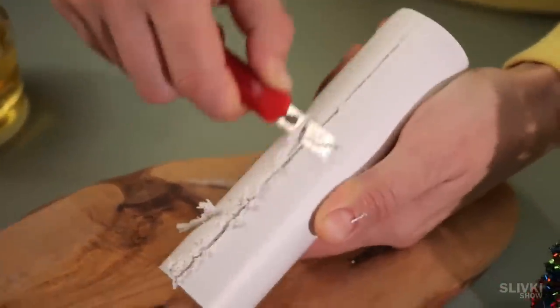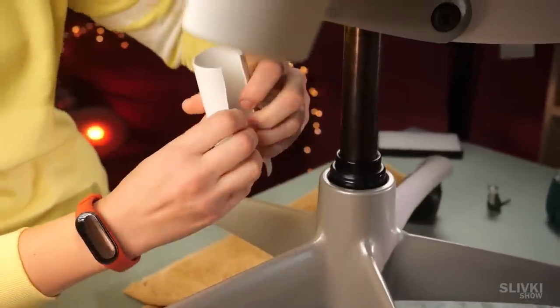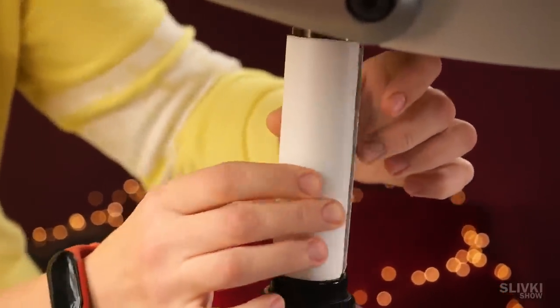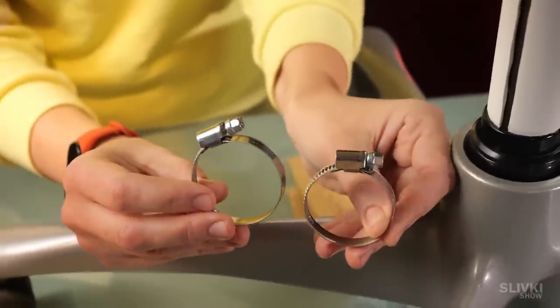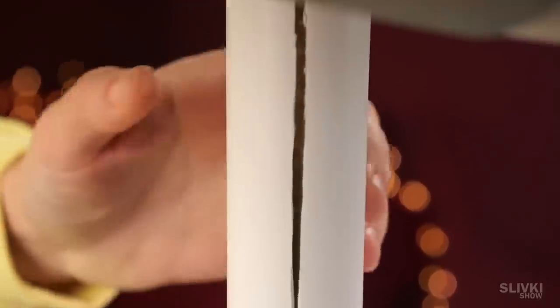Next, we bend the tube at the point of the cut and put it on the tube of our chair. To fix it firmly, we need two wire ties to tighten the white tube. Remember that it will hold the whole weight of your body.